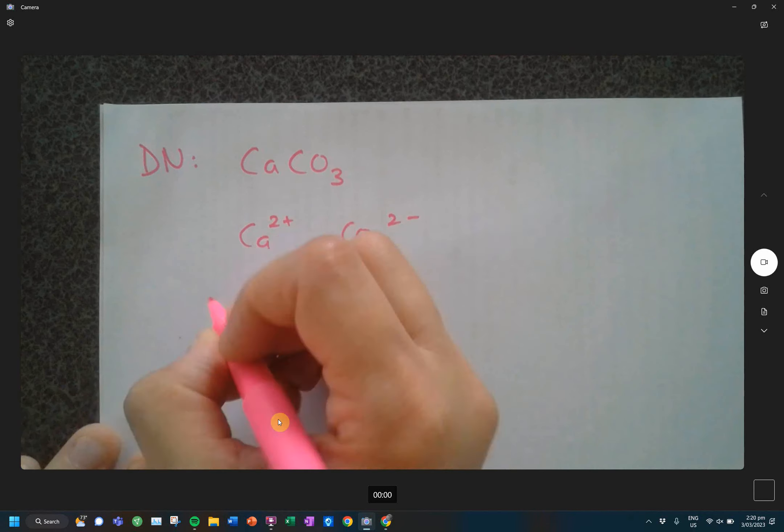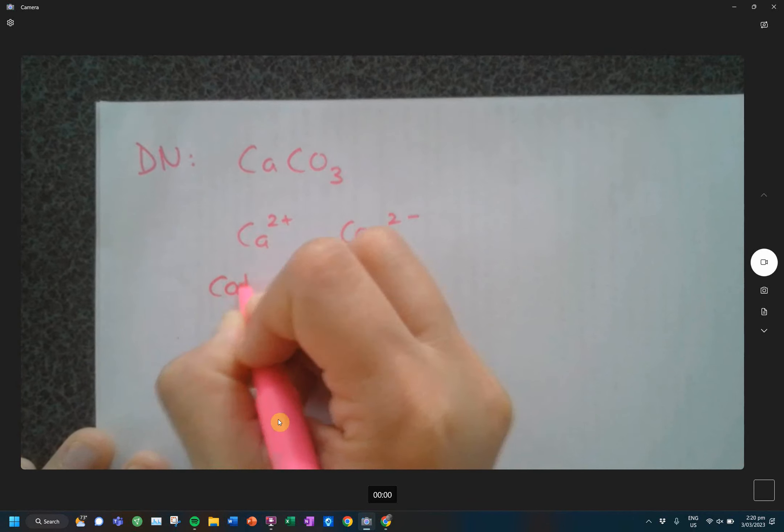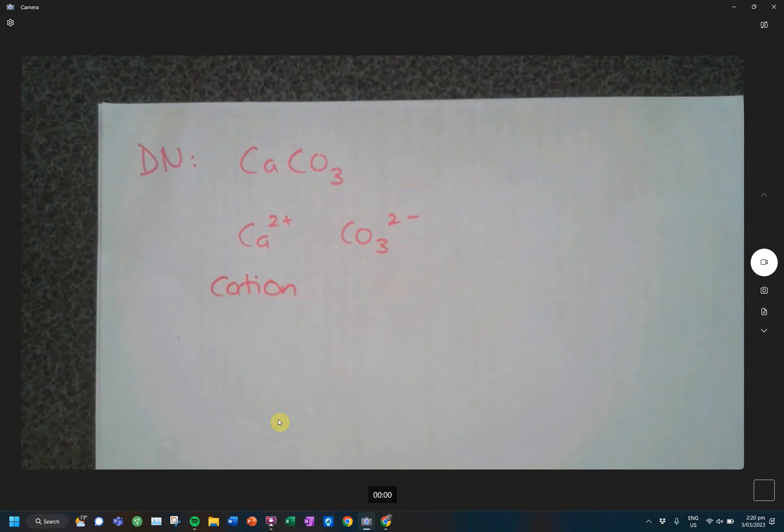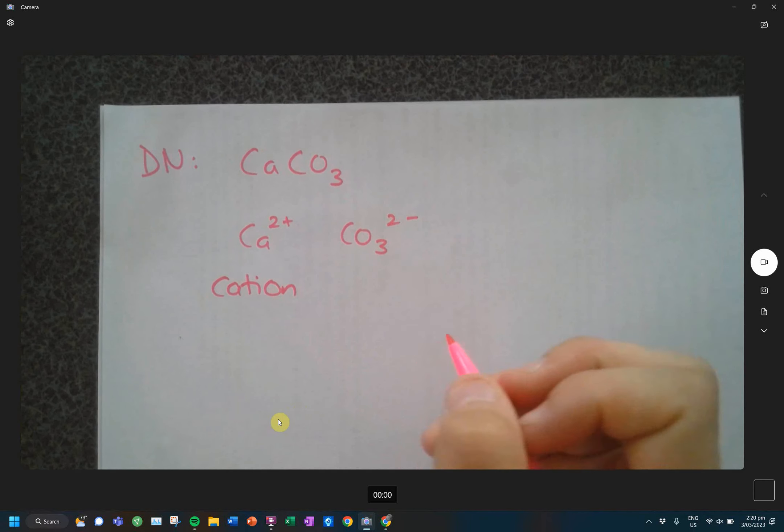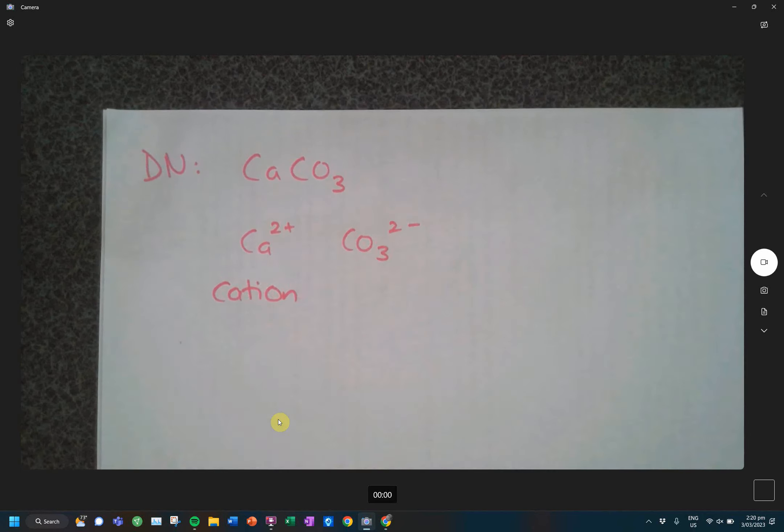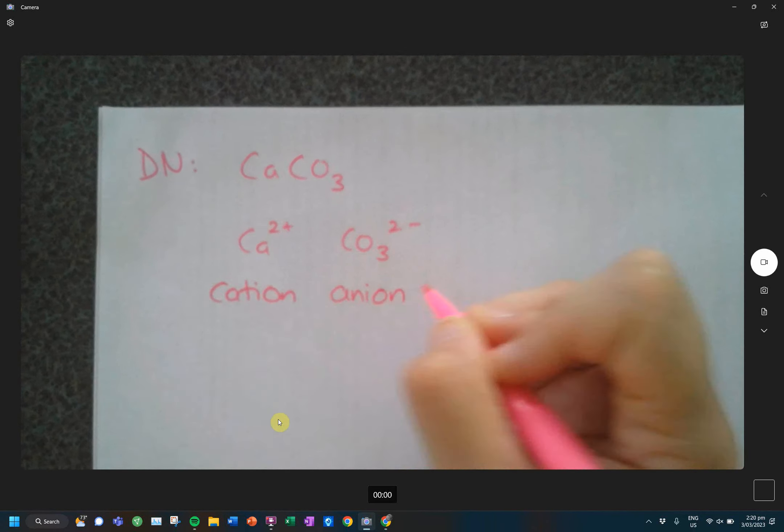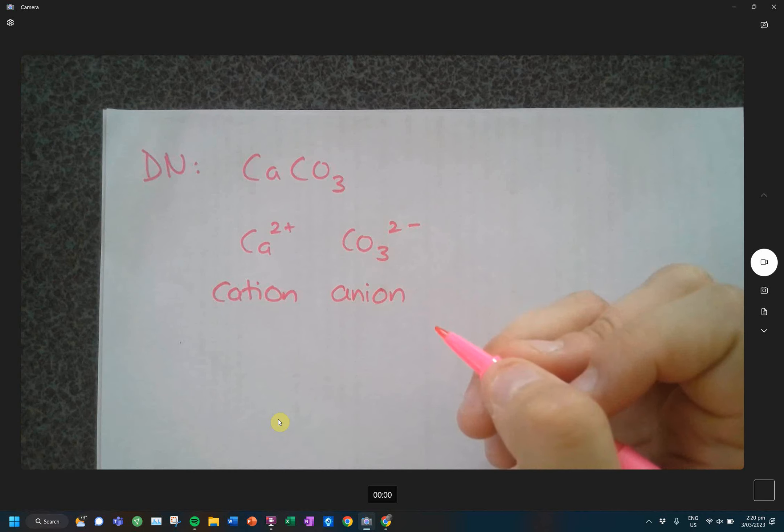Calcium here is positive, so that is going to be my cation. Remember, we thought about the kitty cat and how it is positive. That's the way I like to remember it. And then this negative charge ion is my anion. Anions are negative. Think about an onion and how the onion makes you cry, and you associate crying with negative things.